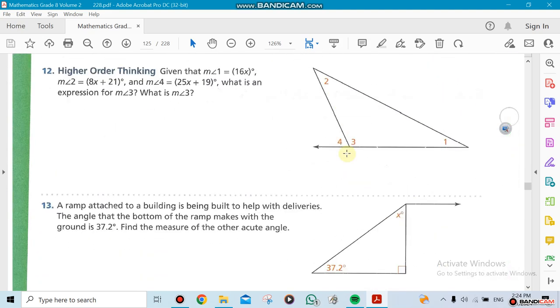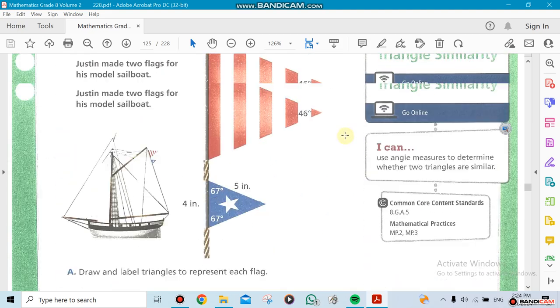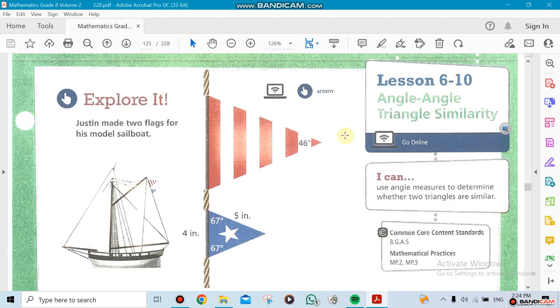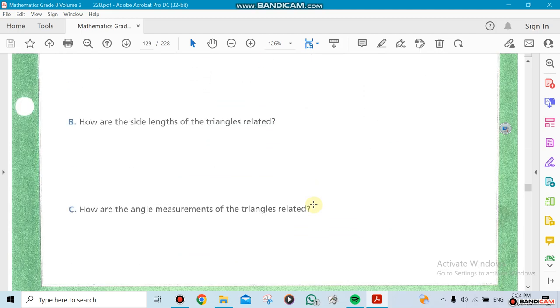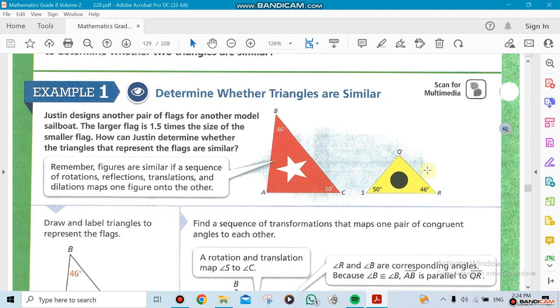The next section will be section 6-10, which is the last section in this chapter, what we call angle-angle triangle similarities. Remember that you could have two different sizes of triangles. Look at this one, looks completely different, right? But if you look at the angles you can see an angle of 50 and 50, another angle of 46 and 46. That means for sure this angle Q is going to equal to this angle A, so in this case we say those are similar.